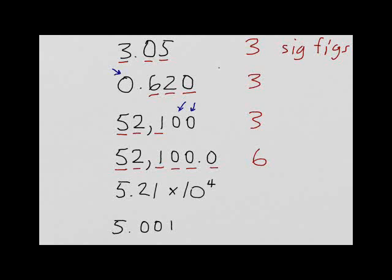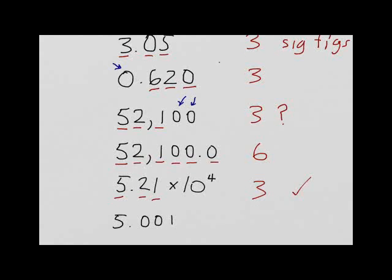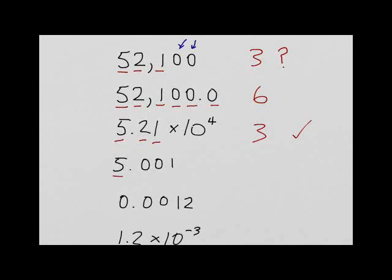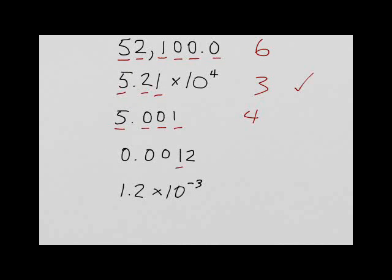A nice way to write 52,100 is 5.21 times 10 to the 4. This is very clearly three significant figures, whereas with the other one, we're not quite sure whether those last two zeros are significant or not. 5.001: this is significant, so that's four significant figures. 0.0012: only the one and the two are significant, whereas these ones all seem to be placeholders. That's just two significant figures. A better way to write that is 1.2 times 10 to the minus 3. Same number, but clearly you can see this has two significant figures.